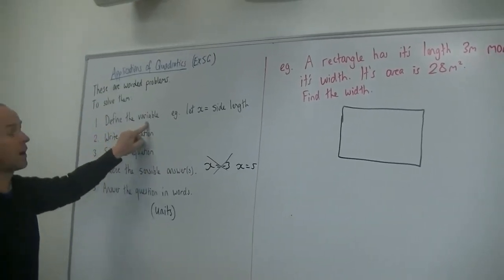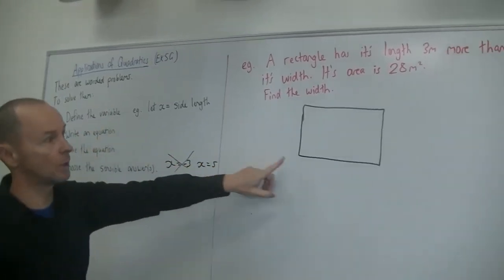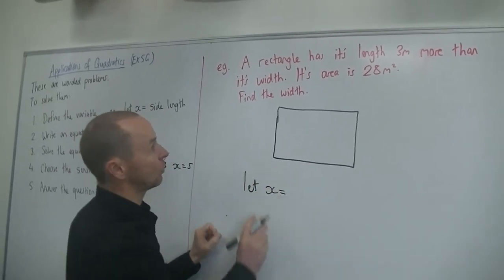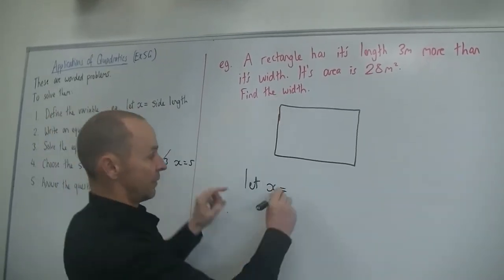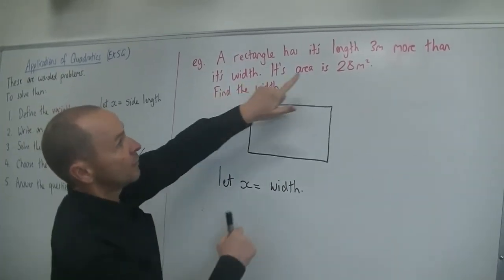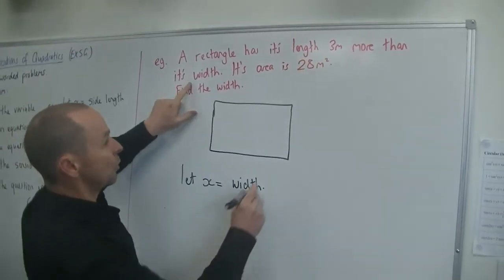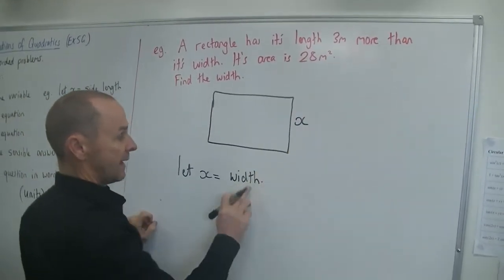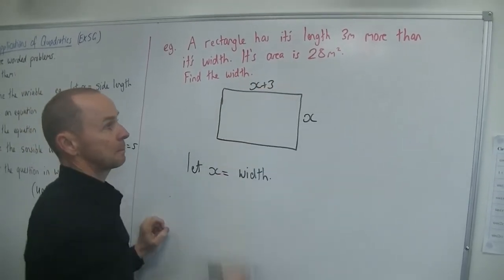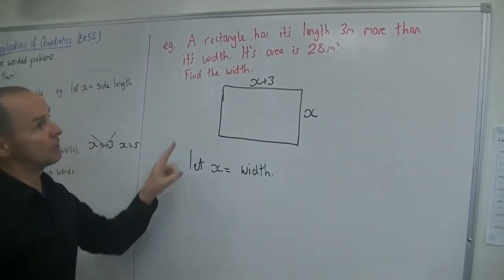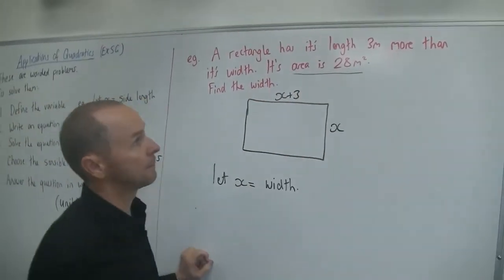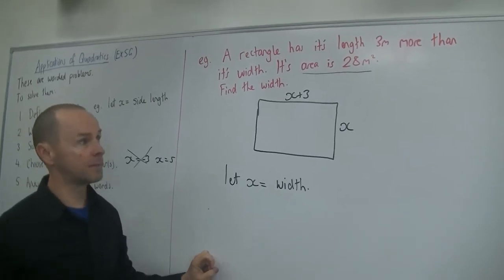But I forgot the very first step to find the variable as well. So while I draw this diagram, my variable, I'm going to say let x equal, and it says find the width. So my x is going to be the width. Excellent. So it says the length is three metres more than its width. So the width is x, we just said that, and the length is three metres more. So that would be x plus three. So now I've got my diagram and it says the area is 28 metres squared. So that's the other important bit of information.